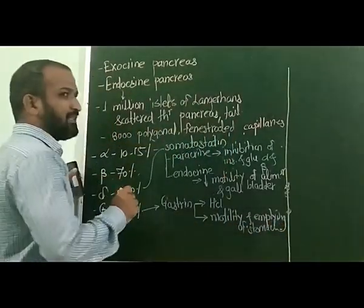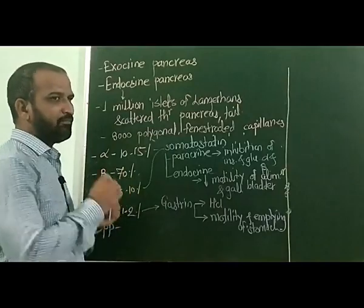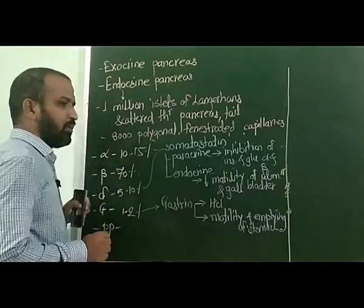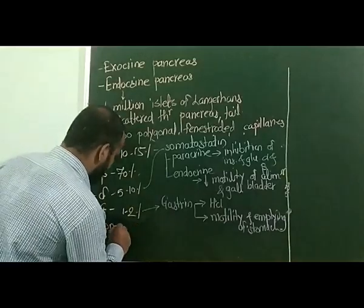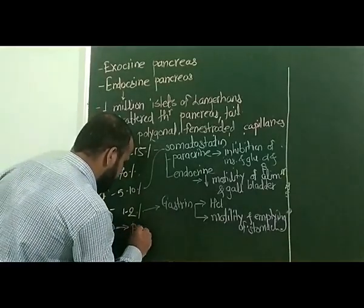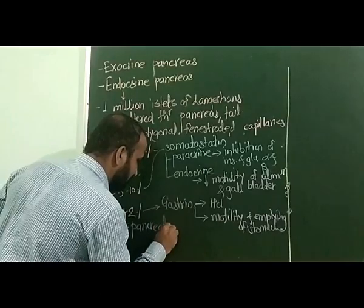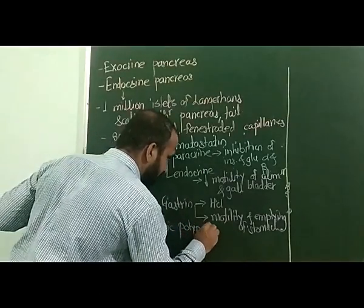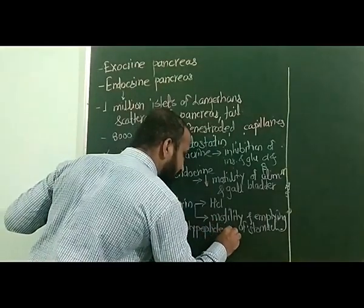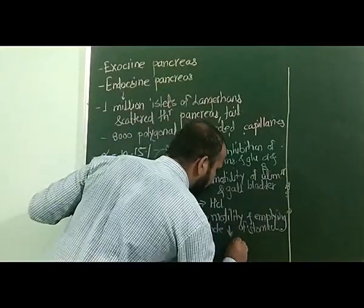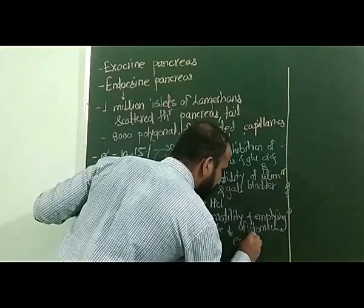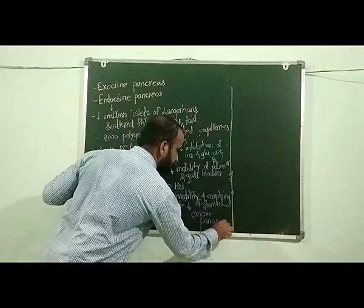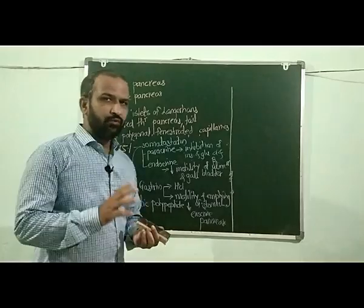The last cell of the endocrine pancreas is called the PP cell. These PP cells produce pancreatic polypeptide, and this pancreatic polypeptide inhibits the secretion of the exocrine pancreas. Thus we will sum up.